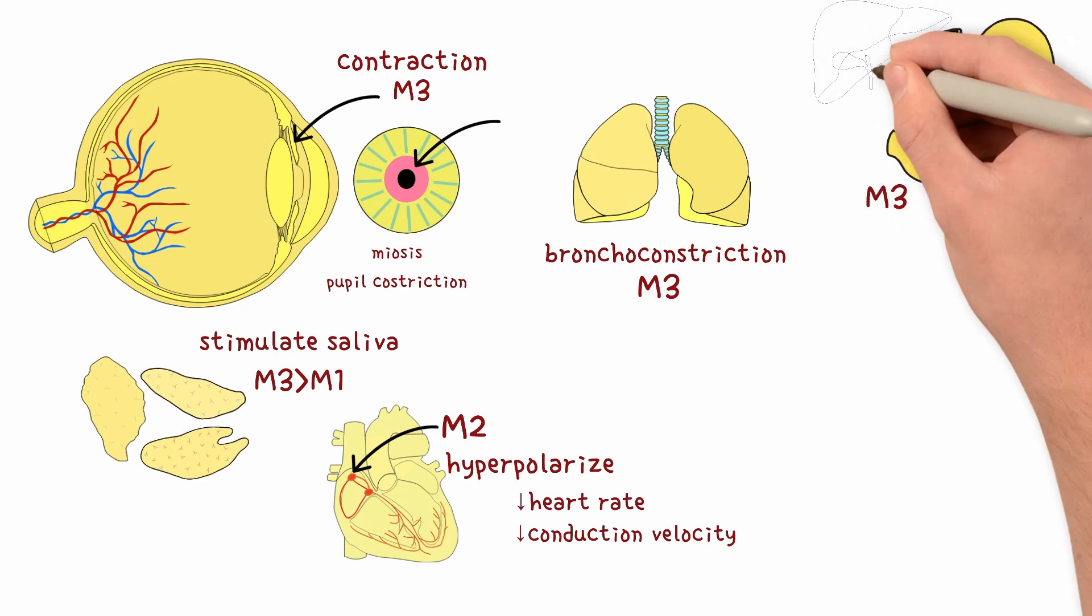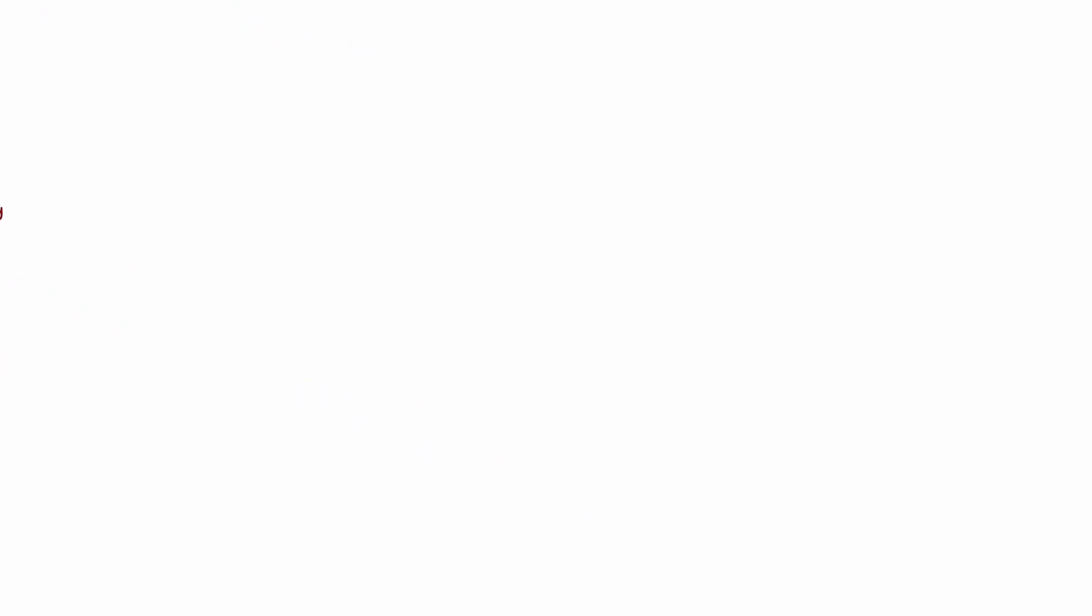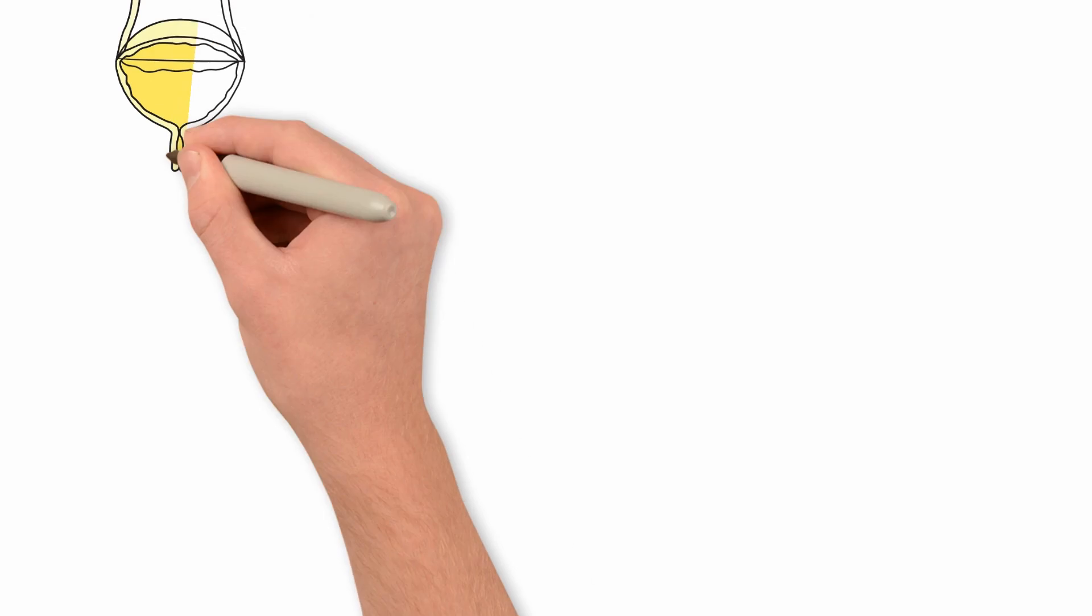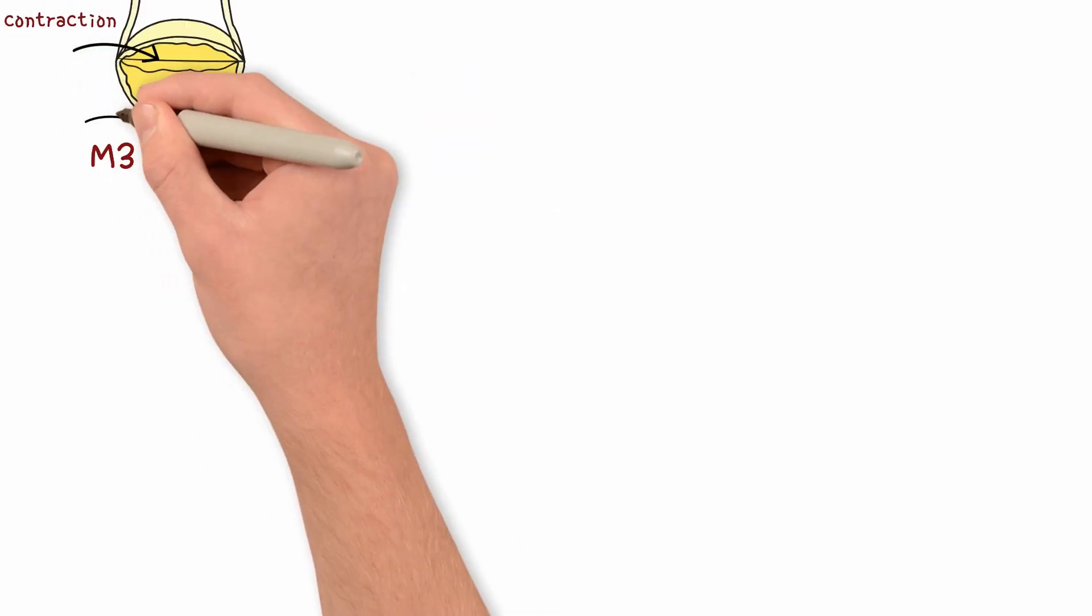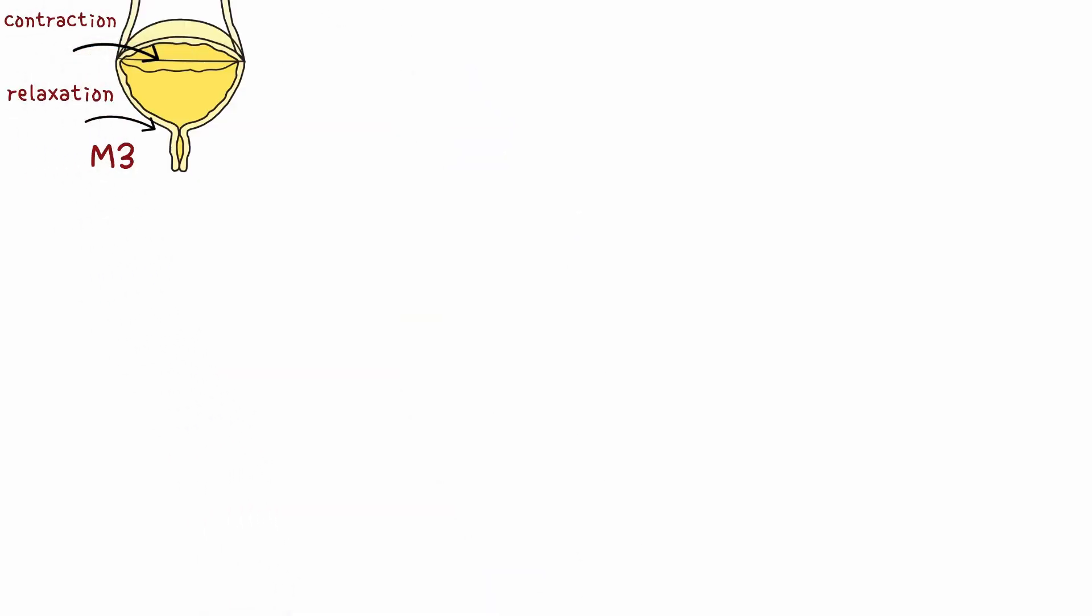The urinary bladder. M3 activation contracts the detrusor muscle and relaxes the bladder neck, facilitating urination.